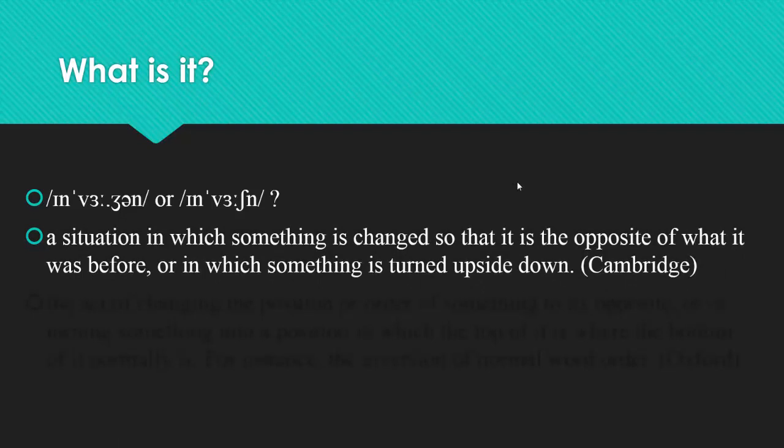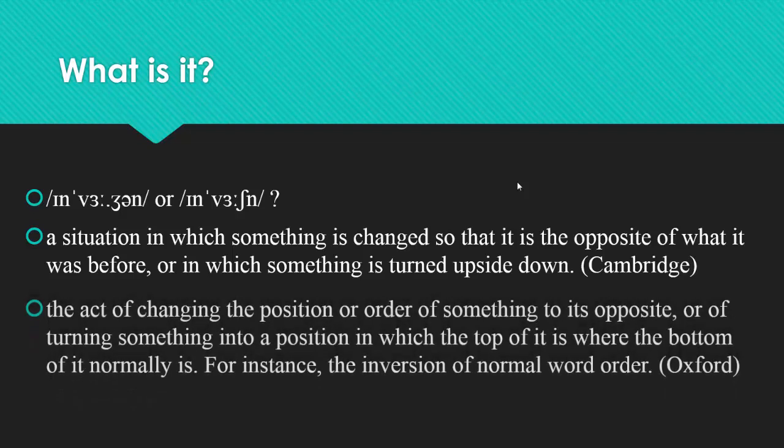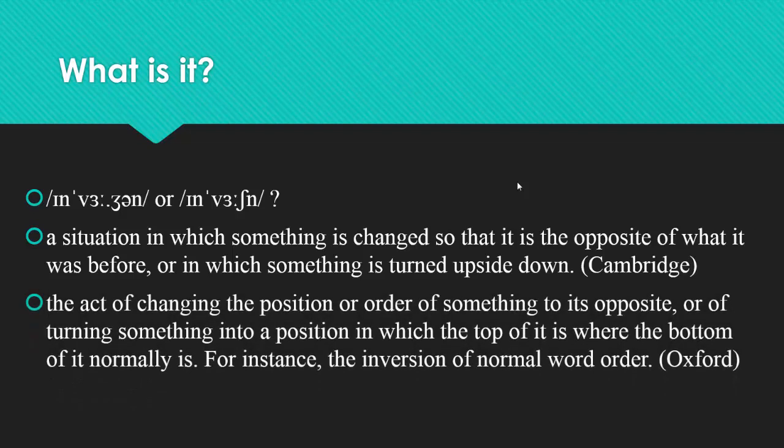The Cambridge dictionary gives us a simple definition of the term. A situation in which something is changed so that it is the opposite of what it was before, or in which something is turned upside down. The Oxford definition is the following: the act of changing the position or order of something to its opposite, or of turning something into a position in which the top of it is where the bottom of it normally is. For instance, the inversion of normal word order.